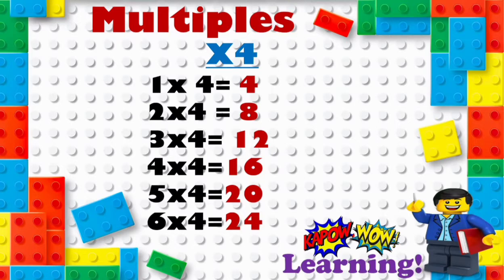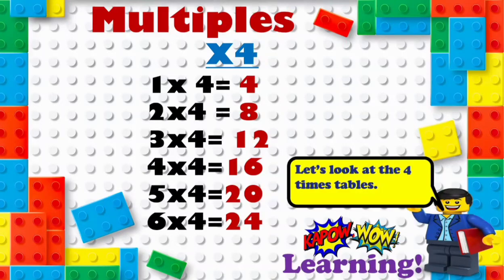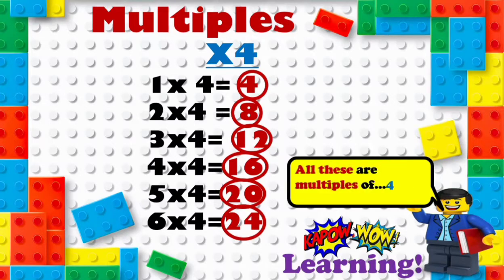So let's look at these four times tables. Where are the multiples? You should have said four, eight, twelve, sixteen, twenty, and twenty-four. All of these are the multiples of four.